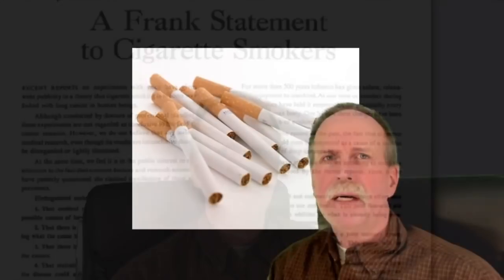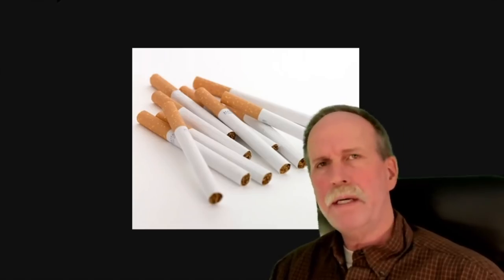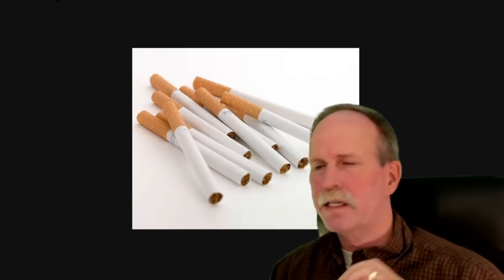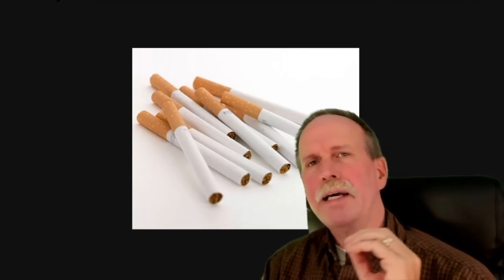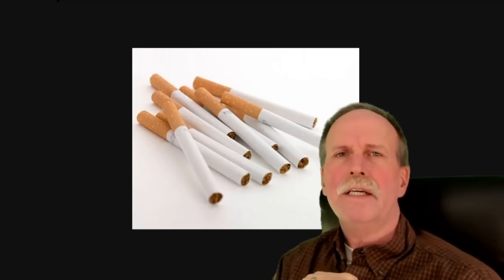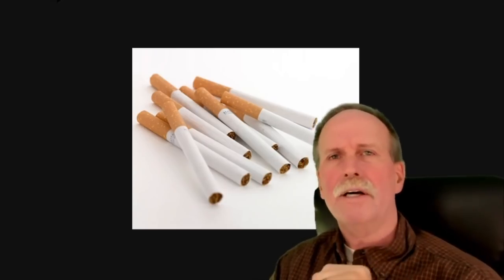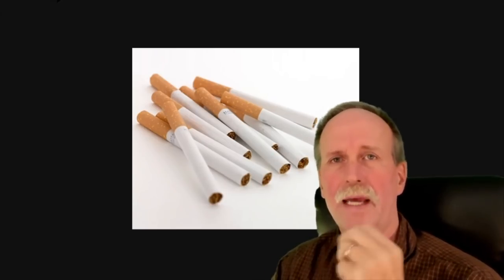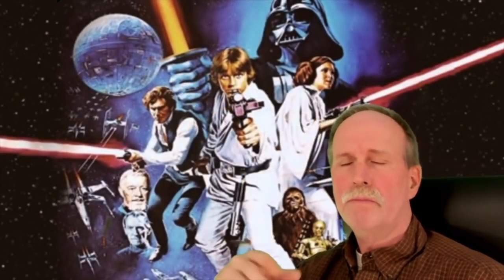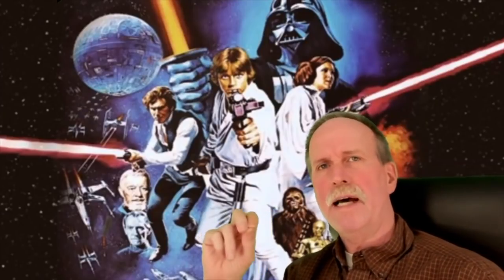In 1969, a tobacco executive wrote: 'Doubt is our product, since it is the best means of competing with the body of fact that exists in the minds of the general public.' They reasoned that by raising doubt they could blunt the effects of these studies. They also increased nicotine levels in tobacco to make it more addictive and added superficial things like filters — so instead of inhaling cancer-causing tobacco smoke, you got to inhale cancer-causing tobacco smoke and fiberglass. When you have something that works, you adapt it to your cause. That's why Star Wars adapted the hero's journey. The so-called tobacco strategy is a very engaging method of denying reality, and as a result, science denial adapted it.